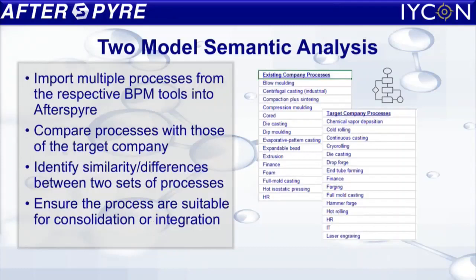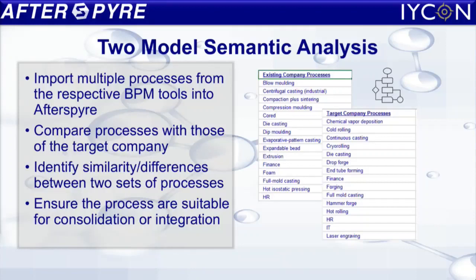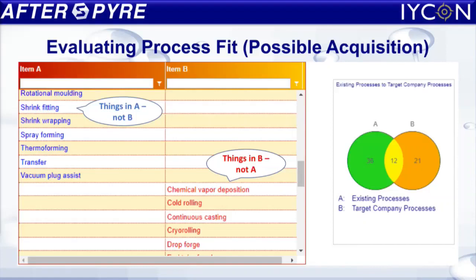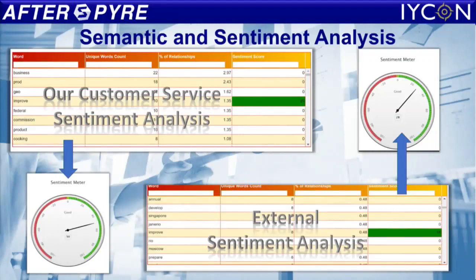For this, we would typically compare processes from our organization and the target company's organization, to see whether there are similarities and whether there are some unique processes which make the target company desirable. Once you run the actual semantic analysis, you will see there are 12 processes which can be consolidated and 21 processes in the target company which hopefully are unique and you want to bring them into the acquisition. The semantic and sentiment analysis also allows you to compare feedback — for example, from our hotel versus customer feedback from a competitive hotel — and understand the sentiment and which one is possibly better.